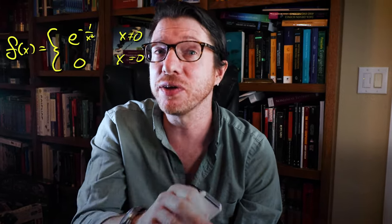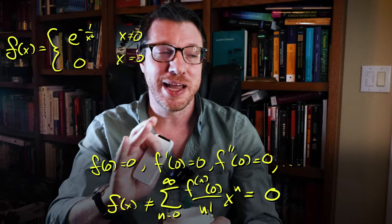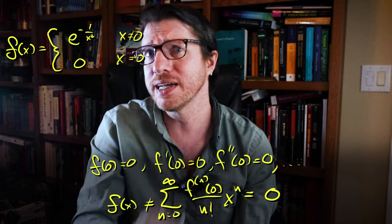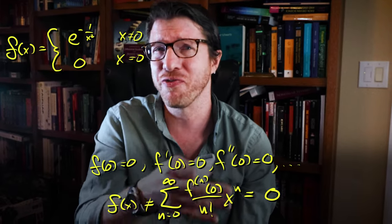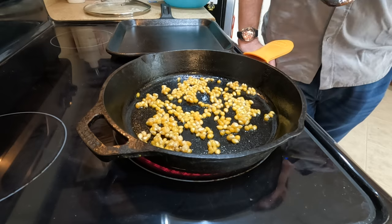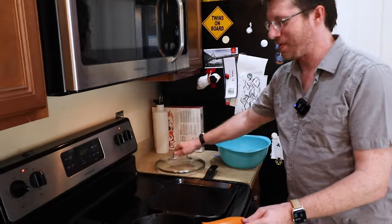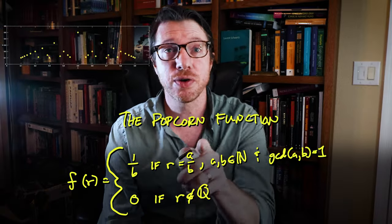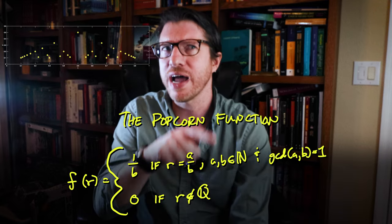In the 19th century, we discovered that functions were more complicated than we previously realized, and even some infinitely differentiable functions can fail to have power series representations. This really shook analysis and mathematics for a long time, and we realized we needed to take a closer look at what we meant by function. The popcorn function — also called Thomae's function — is a function that is continuous and zero at every irrational point, but discontinuous at every rational point.